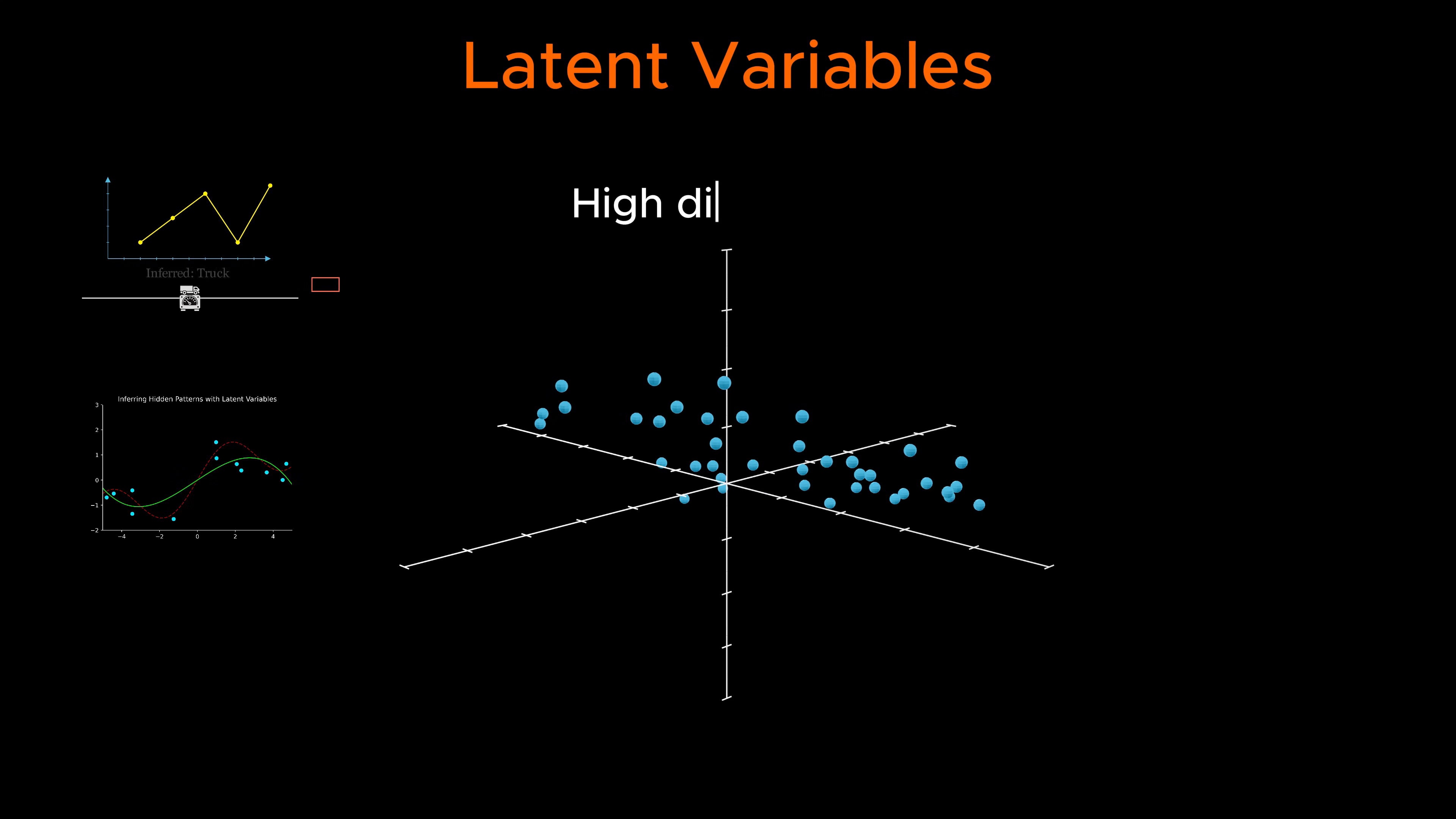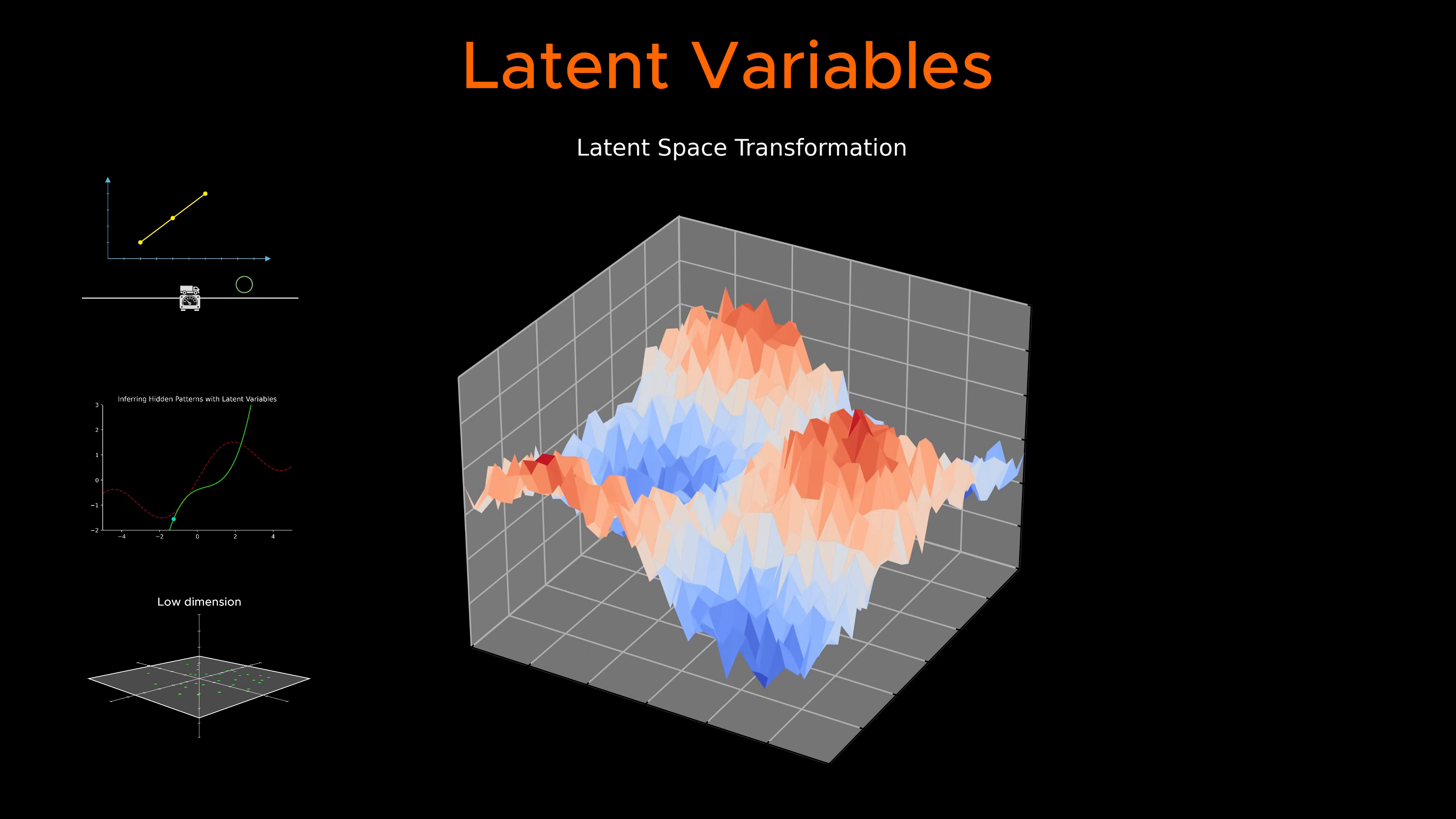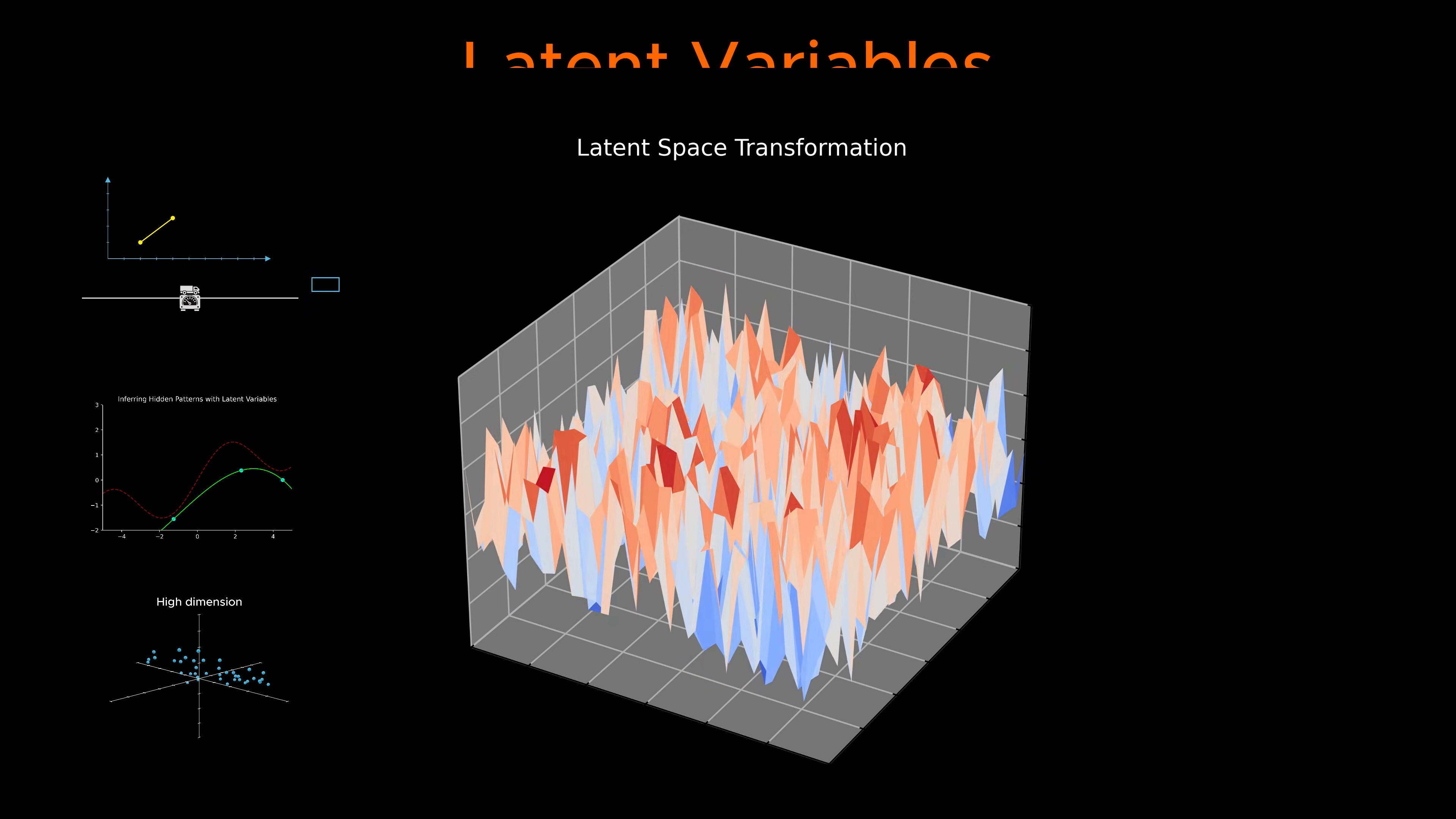But this raises some questions. If AI models transform high-dimensional visible data to lower-dimensional invisible data, how do they decide which variables to keep? How do language models like ChatGPT or image models based on GANs use latent space to generate their output? And can we ever understand what is going on inside the latent space? Let's break it down step by step.